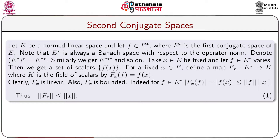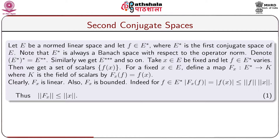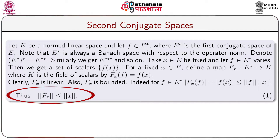It is easy to see that F_x is linear. That means if we take f, g belonging to E*, then F_x(f + g) = F_x(f) + F_x(g). For any scalar λ, F_x(λf) = λ F_x(f). Also, F_x is bounded. This can be seen from the following fact: for f belonging to E*, |F_x(f)| = |f(x)|. As f belongs to E*, f is a bounded linear functional, so |f(x)| ≤ ‖f‖ · ‖x‖. Thus ‖F_x‖ ≤ ‖x‖.